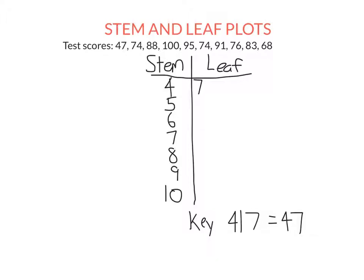So there are no scores in the 50s. Let's go to the 60s. Well, there's one score, which is 68. In the 70s, there are three scores. So we write four for 74. There's another 74 and a 76. Again, in the leaf, we only write the number of units.